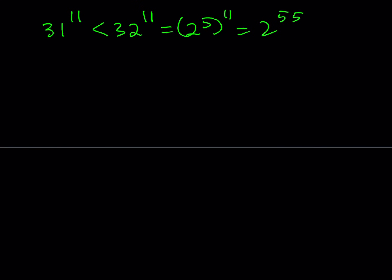Now I was able to compare 31 to the 11th to a power of 2. I know that this number is less than 2 to the 55th. Let's go ahead and take 17 to the 14th and do the same thing. We know that 17 is pretty close to a power of 2 as well, but it's on the larger side. So 17 to the 14th is greater than 16 to the 14th, which can be written as 2 to the 4th to the 14th. And 4 times 14 is equal to 56.